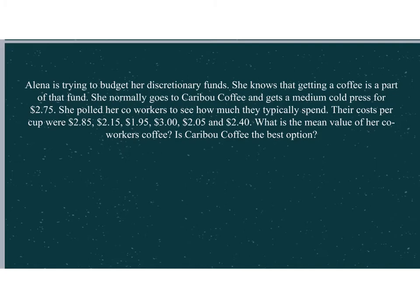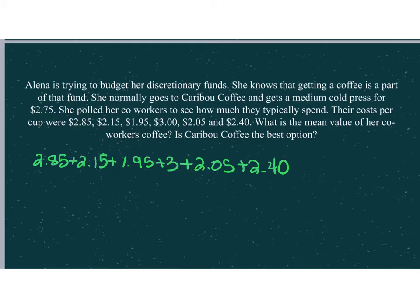Let's talk about this first problem. Alina is trying to budget her discretionary funds. She knows that getting a coffee is part of that fund. She normally goes to Caribou and gets a medium cold press for $2.75. She pulled her coworkers to see how much they typically spend. Their costs per cup were $2.85, $2.15, $1.95, $3, $2.05, and $2.40. What is the mean value of the coworker's coffee? And is Caribou the best option?